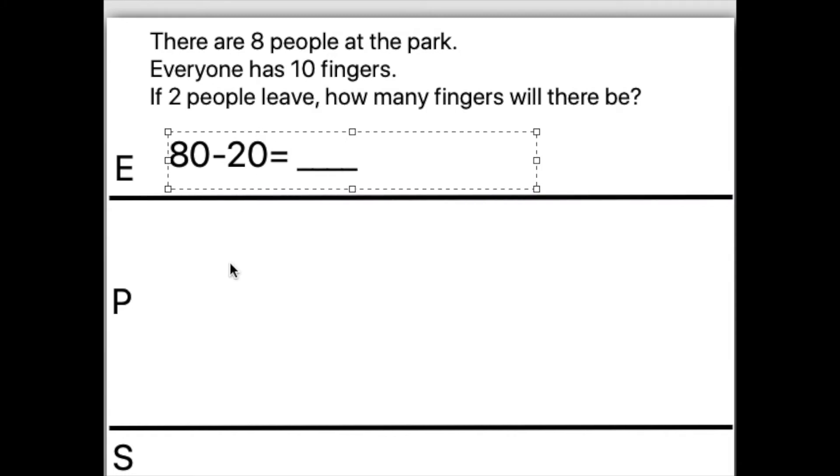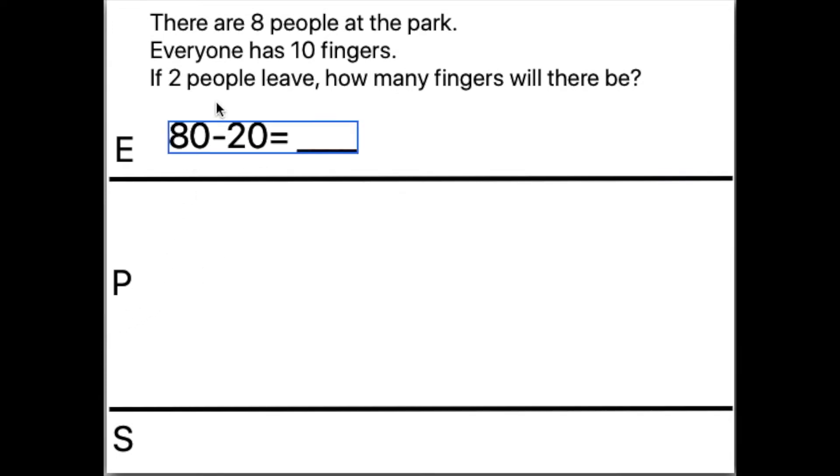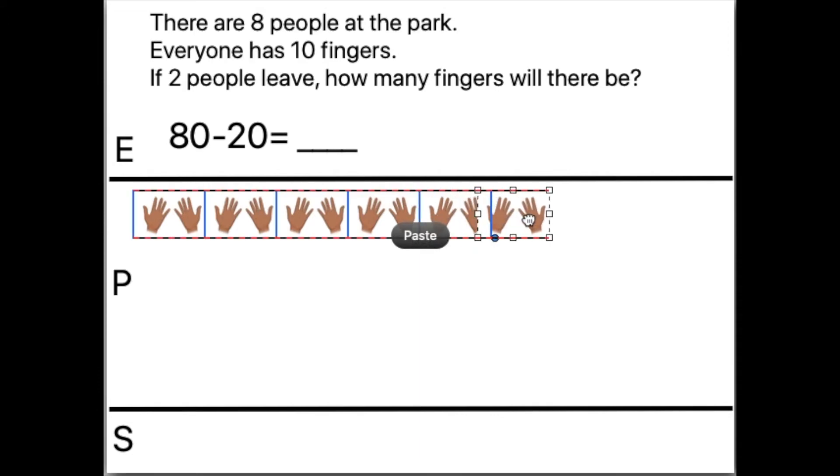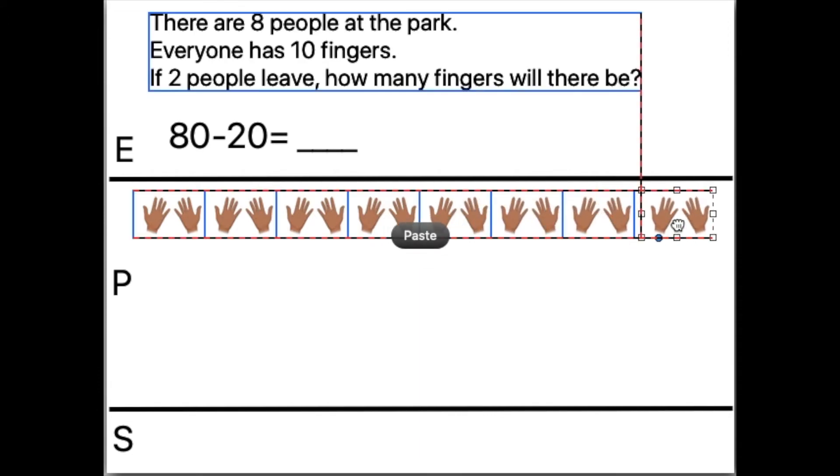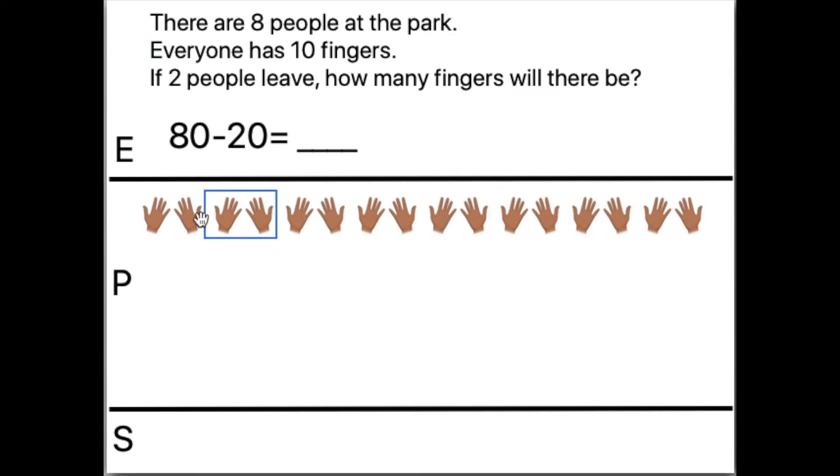Let's use our picture and we'll solve it two different ways. There are eight people at the park. There are 80 fingers. I can show that like this. 10, 20, 30, 40, 50, 60, 70, 80. I just made eight people with ten fingers each.